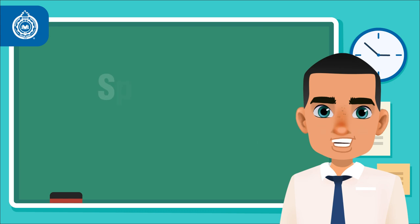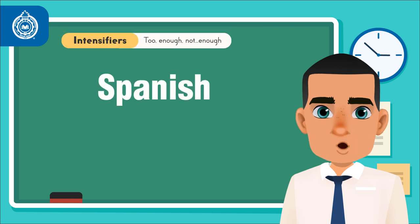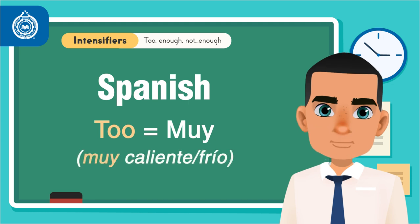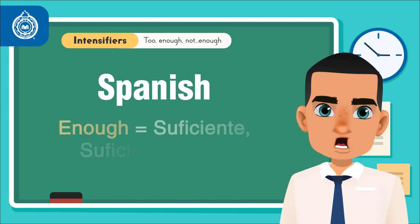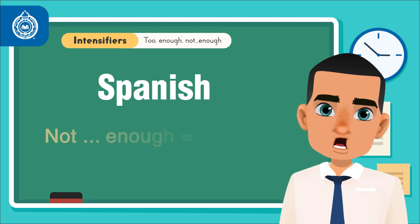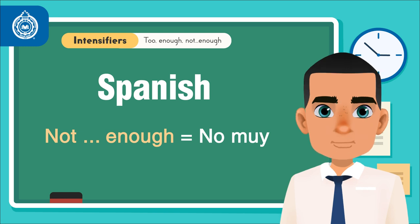Now, in Spanish, we use too as muy, as in muy caliente or frío. Enough translates as suficiente o suficientemente, and not enough as no muy.